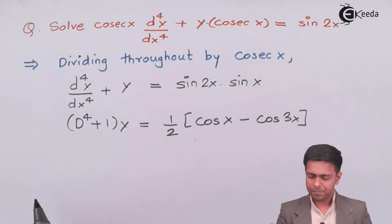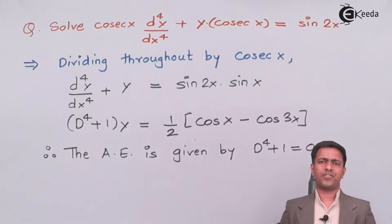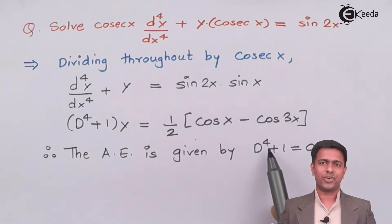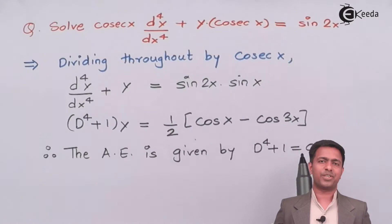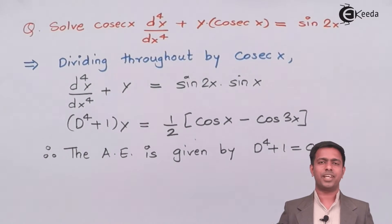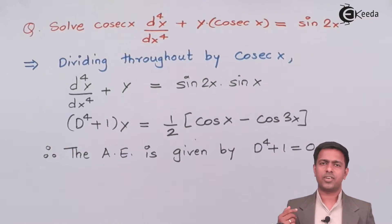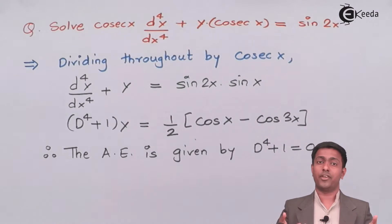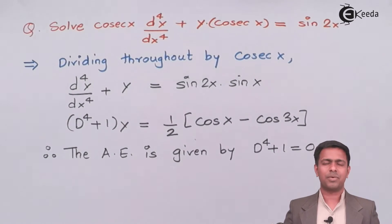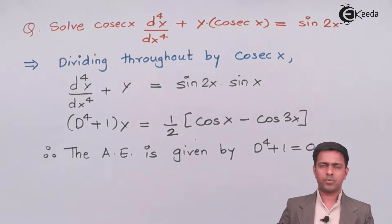Next we find the auxiliary equation by equating the function of D to zero: d⁴ + 1 = 0. Since the degree is four, we need four roots. Taking d⁴ = −1 and trying successive square roots doesn't work because we get d² = ±i, and we can't take the square root of an imaginary number that way.